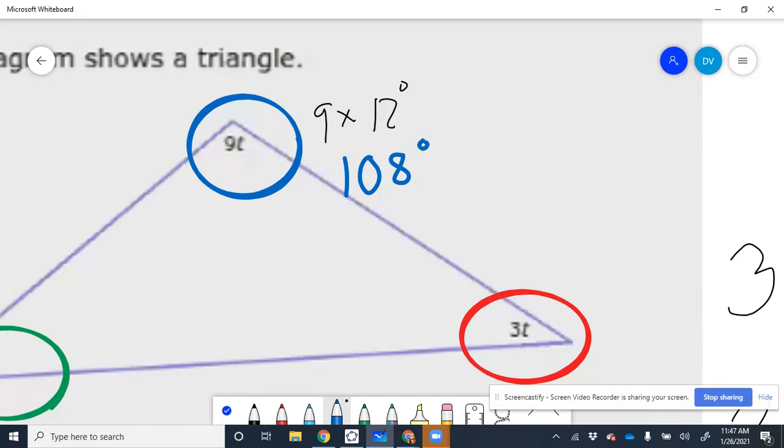Also, over here, again, T we already said was 12. So this will be 3 times 12 degrees. 3 times 12 degrees is 36 degrees.